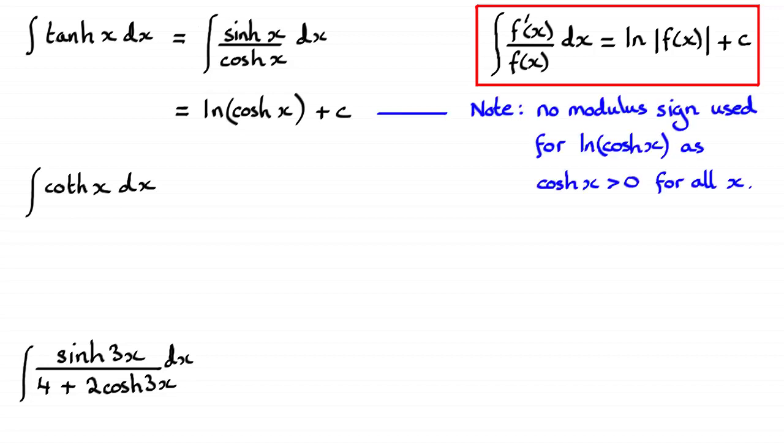And there's a note to that effect. No modulus sign used for the natural log of cosh x, as cosh x is greater than zero for all values of x.